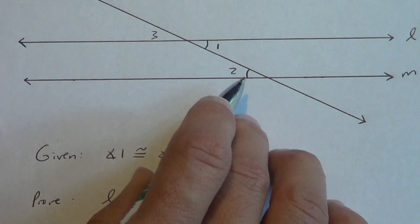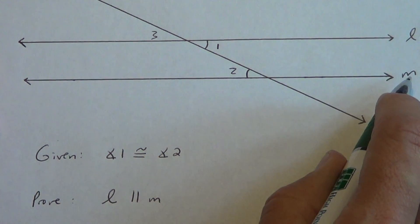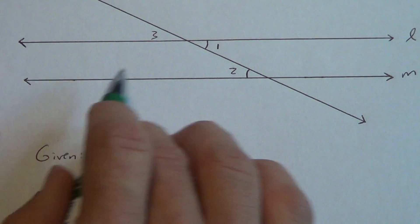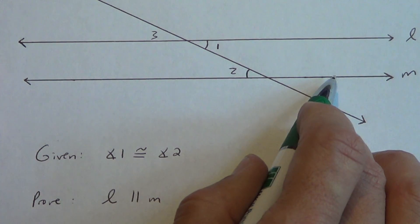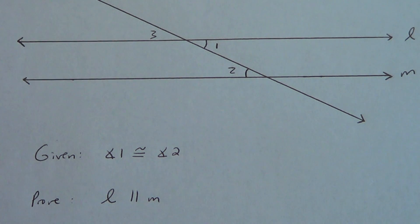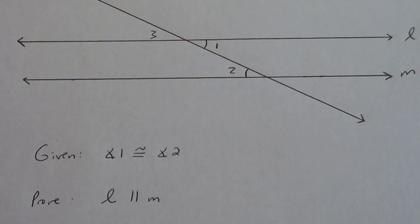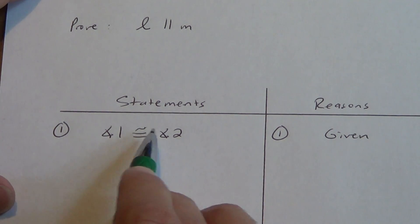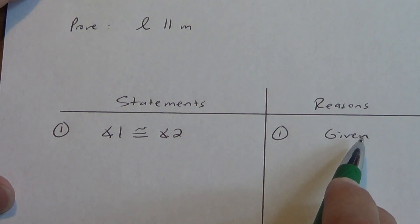Angles 1 and 2 are congruent. We're going to try to prove that lines L and M are parallel. You'll notice there are no marks anywhere on these lines. Remember, those shaded triangles mean that the lines are already parallel — we don't know that, we're trying to prove they are parallel, so that's why there's no marks on them. I have my two-column proof ready to go. Angle 1 is congruent to angle 2 because it's a given.